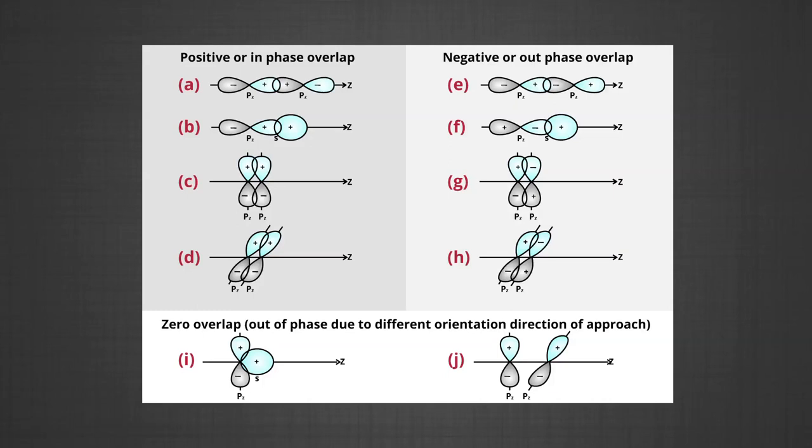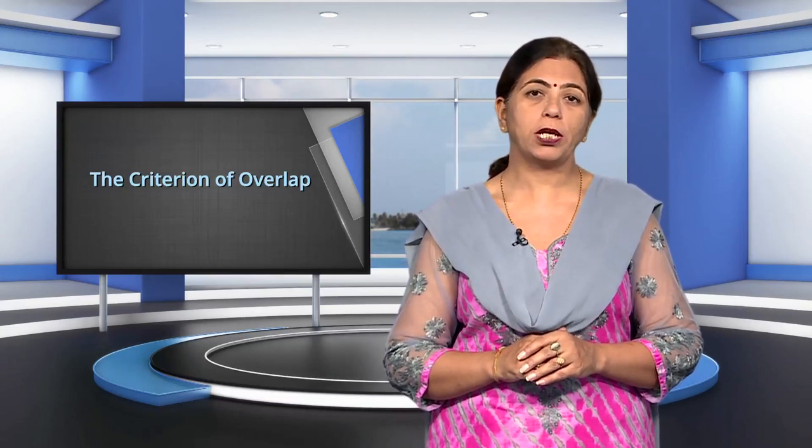The various overlaps of S and P orbitals are depicted in the figure. From the figure you can see different types of overlaps — zero overlap means out of phase due to different orientation and direction of approach. The criteria of overlap as the main factor for formation of covalent bonds applies uniformly to homonuclear or heteronuclear diatomic and polyatomic molecules.